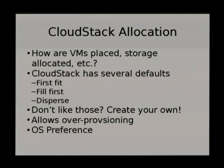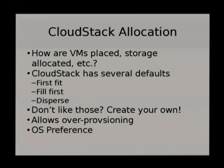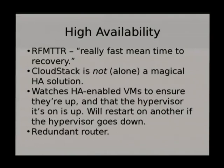CloudStack allocation — how does CloudStack decide where to put VMs? Basically you tell it what you want. If you're energy-conscious and want to fill up servers before turning on another one, you can do fill-first. You can do first-fit — pick the first host that responds. You can do dispersion to spread out workload. If you don't like any of the available options you can write your own. You can also do over-provisioning and allocation by OS preference.